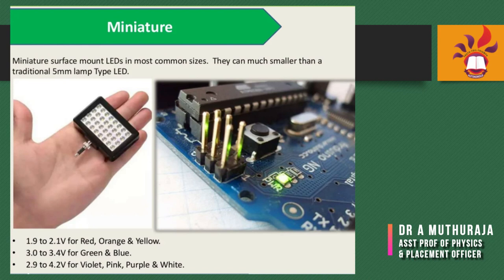Miniature surface mount LEDs come in the most common sizes and can be much smaller than traditional 5 mm lamp-type LEDs — very small but with high efficiency and very low power consumption. Power consumption values are: 1.9–2.1 V for red, orange, and yellow; 3–3.4 V for green and blue; and 2.9–4.2 V for violet, pink, purple, and white — all less than 5 V.